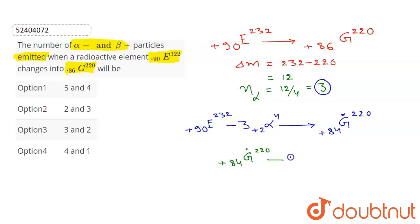What should we do? We should emit two negative charge, without any change in mass. Mass में कोई change नहीं होना चाहिए. इसलिए हम बीटा पार्टिकल का इस्तिमाल कर रहे हैं. It will turn into 86 G 220.